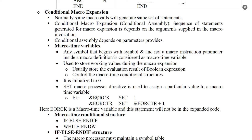In the macro body, we can declare a macro time variable using an ampersand variable. For example, &ERCK SET1 — the variable is a label and its value is equal to 0. We can reset and change the value at expansion time. This is the macro time variable.